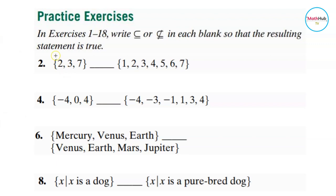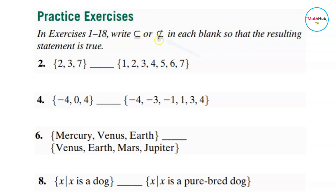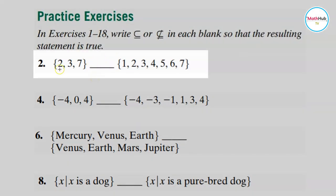Let's consider the following exercises. We want to either write this symbol or this symbol — this symbol is used to indicate that the set is a subset, and this is not a subset. We use one of these symbols in each blank so that the resulting statement is true. For instance, in number two, we have the set {2, 3, 7} and we want to compare it to the set containing {1, 2, 3, 4, 5, 6, 7}. Is it a subset or not a subset?